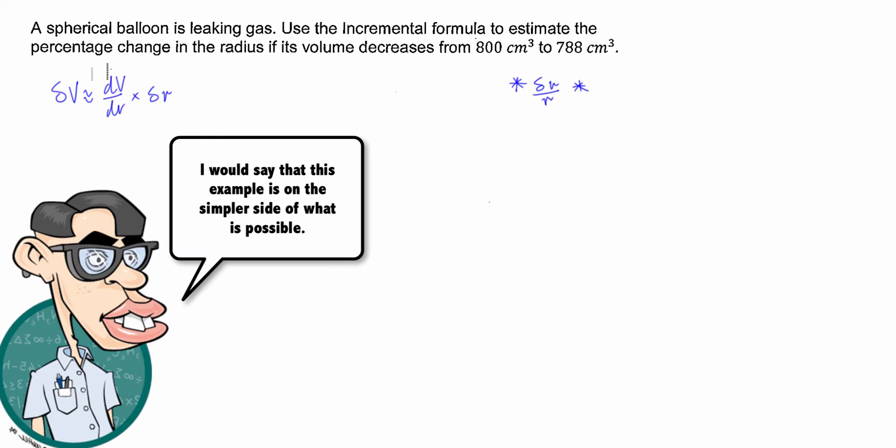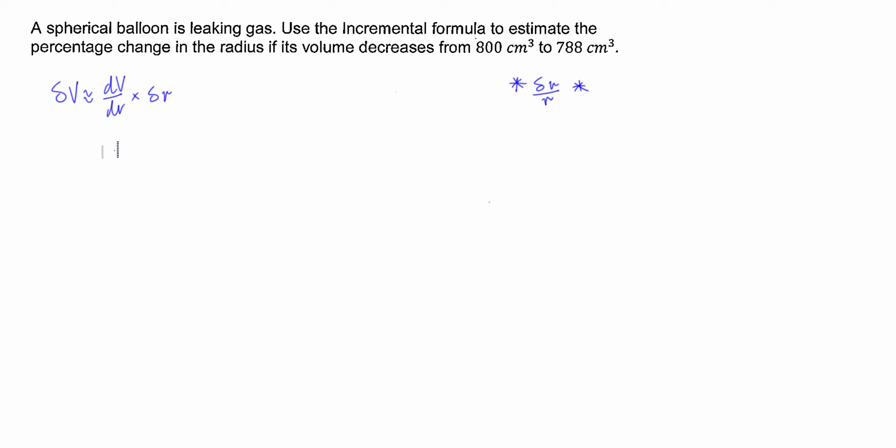So first of all let's figure out what this dV/dr is. Well we know that volume of a sphere in terms of radius, well hopefully all you guys know the volume in terms of radius is four over three pi r cubed. So if we're going to talk about the derivative of this dV/dr, we're going to be left with three times four over three is simply four pi r squared.